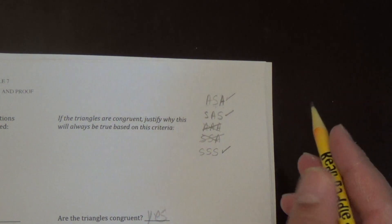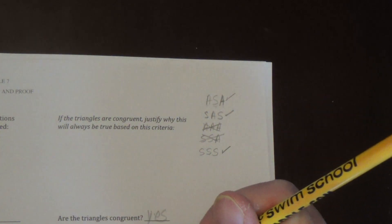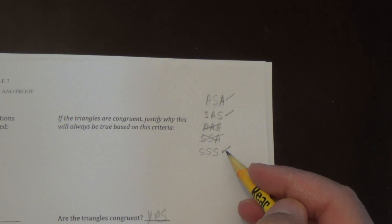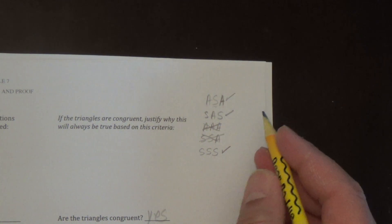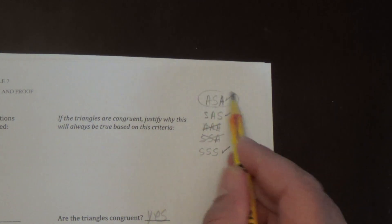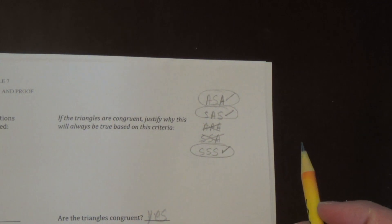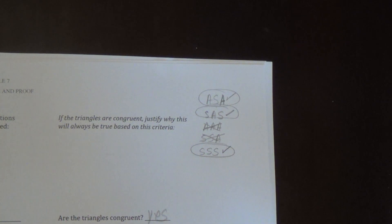Big picture: what we want to take out of today. We're trying to prove that triangles are congruent. What we just tested: angle-side-angle works; side-angle-side works; angle-angle-angle does not work; side-side-angle does not work; and side-side-side works. So these three — ASA, SAS, and SSS — will prove that triangles are in fact congruent. There's one other way we're going to do tomorrow.